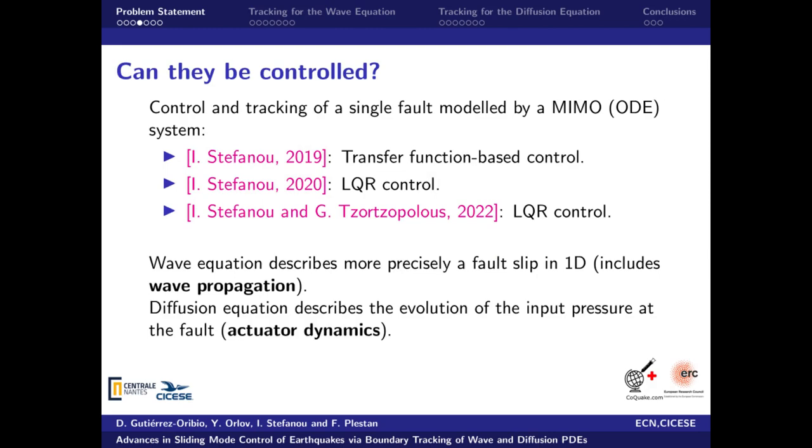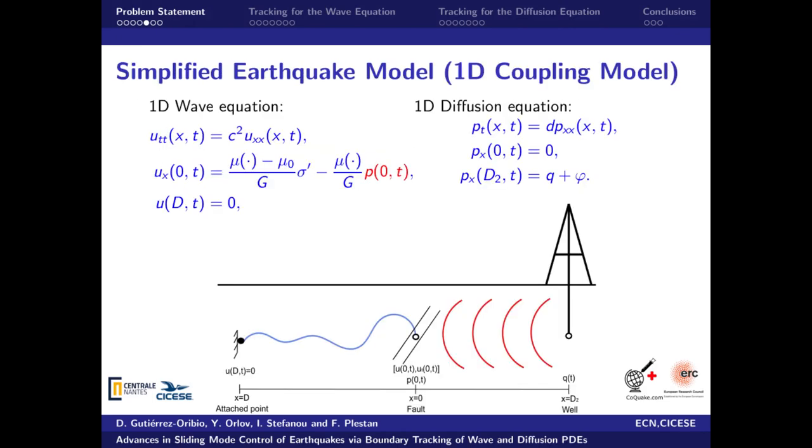Recently, some advances in control and tracking of a single fault modeled by MIMO ODE systems have been done using linear control. Nevertheless, PDEs could model better a single fault. The wave equation includes the wave propagation and the diffusion equation models the actuator dynamics of the pressure applied to a fault. Therefore, a simplified model of a 1D earthquake can be represented as a coupling connection of the wave and diffusion equations. The wave equation has the fault dynamics at one of the boundaries and describes the wave propagation until the other boundary condition, where an attached point is present.